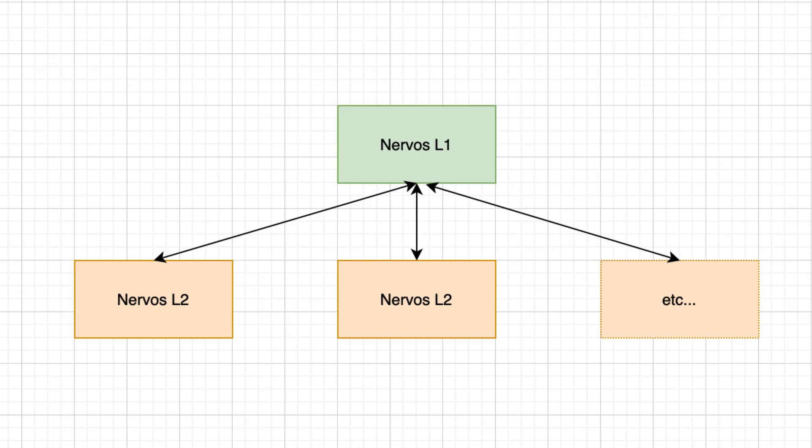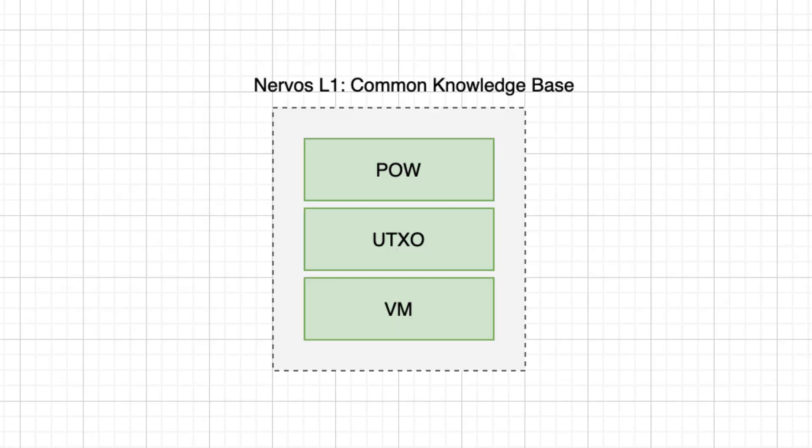CKB has a multi-chain architecture. It has a layer 1 blockchain for decentralization and security, and multiple layer 2 chains for scalability and flexibility. The layer 1, also called Common Knowledge Base or just CKB, has a proof of work consensus and a UTXO data structure like Bitcoin. It also has a virtual machine to offer smart contract capabilities.